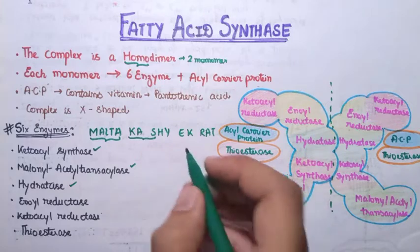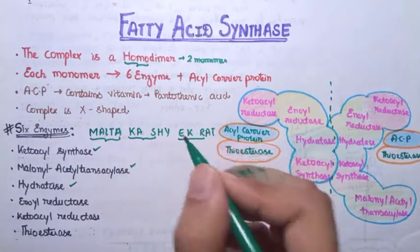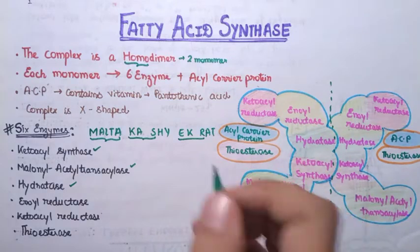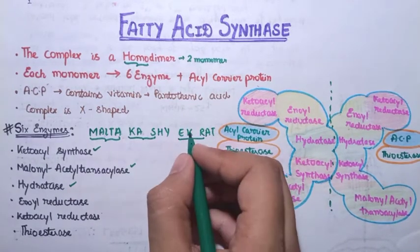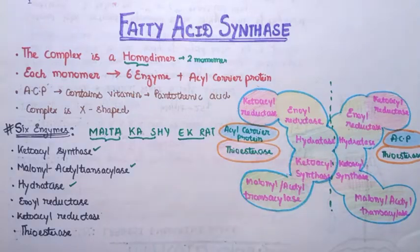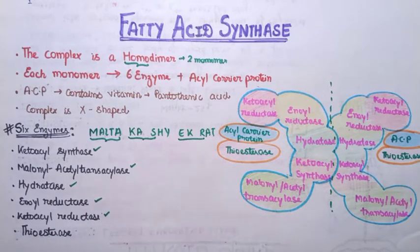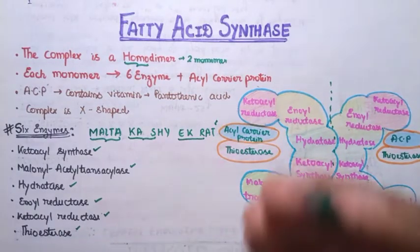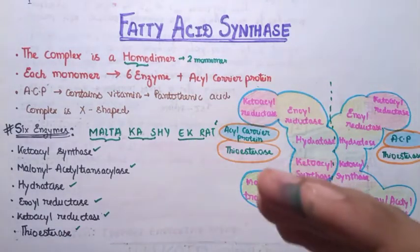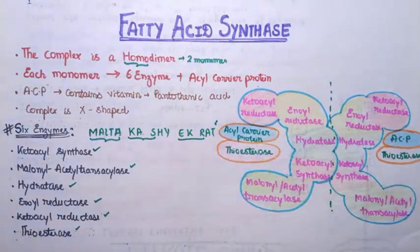For the remaining enzymes, take EKR together because these are the reductase group: E stands for enol reductase, K stands for ketoacyl reductase. The last letter T stands for thioesterase. So the full six enzymes are: malonyl acetyl transacylase, ketoacyl synthase, hydratase, enol reductase, ketoacyl reductase, and thioesterase — plus the acyl carrier protein.